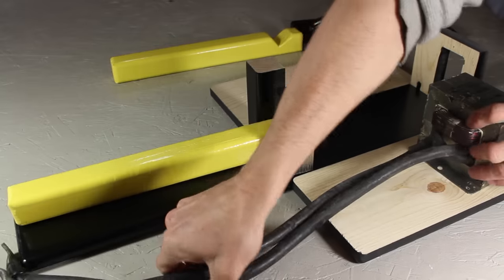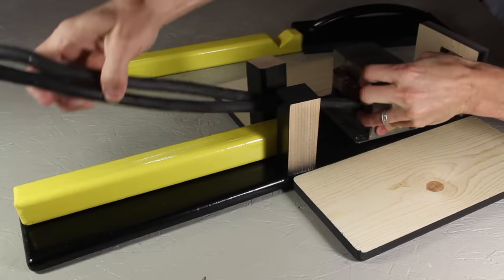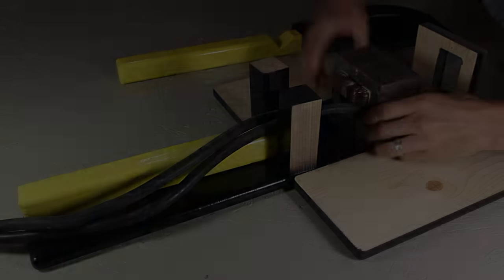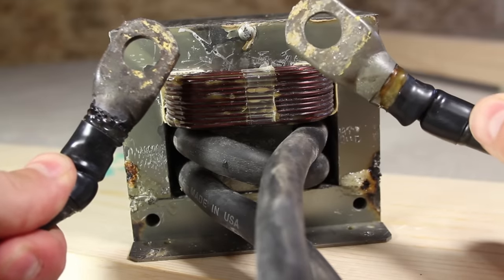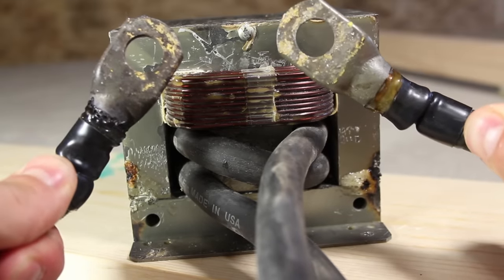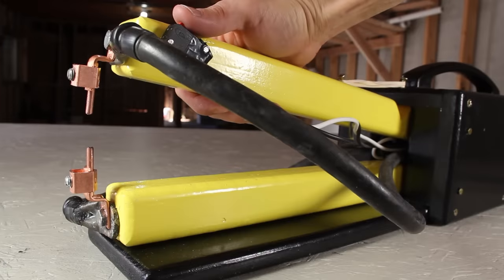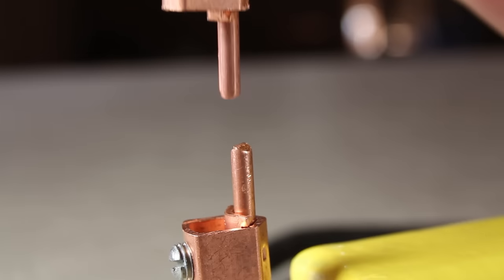This modified transformer is the heart of the spot welder, and you might remember it as the metal melter. If this doesn't look familiar, check out how this was made and what it can do in some of my other videos. I found a practical application for it in making a spot welder like this one.